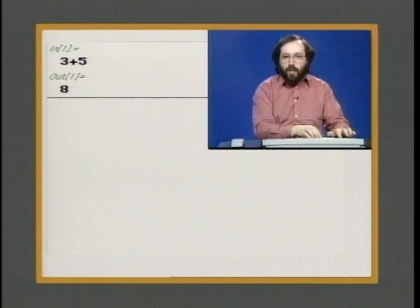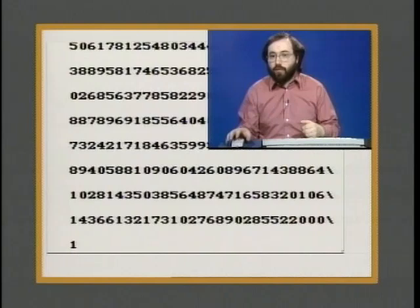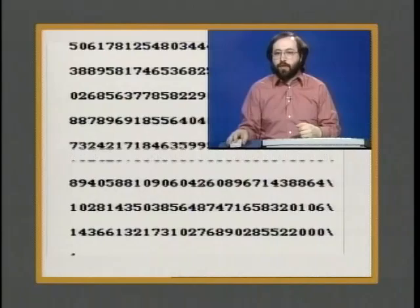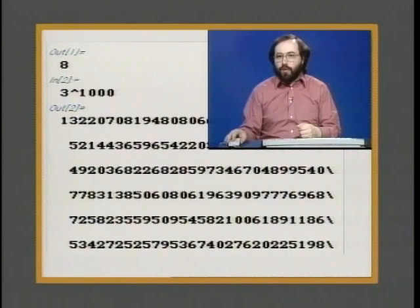Let's try something a bit more difficult. Let's say we ask Mathematica to work out something like three to the power one thousand. Mathematica will think for a bit longer and then give us a much longer result. In this case, we'll have the exact answer for three to the power one thousand, which is a number that goes on for several screens. We can scroll back here to look for the beginning of that number. That's a simple example of a numerical calculation done with Mathematica.